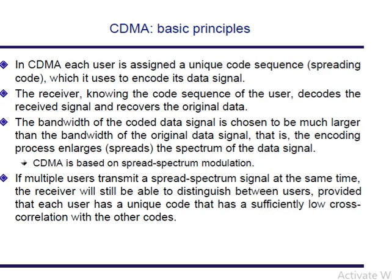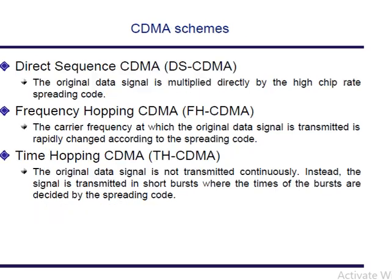In CDMA, each user is assigned a unique code sequence. The receiver, knowing the code sequence of the user, decodes the received signal and recovers the original data. The bandwidth of the coded signal is chosen to be much larger than the bandwidth of the original data signal — that is, the chip rate is much larger than the data rate. CDMA is based on spread spectrum modulation. If multiple users transmit spread spectrum signals simultaneously, the receiver can still distinguish between users, provided each user has a unique code with sufficiently low cross-correlation. CDMA can be broadly classified as Direct Sequence CDMA, Frequency Hopping CDMA, and Time Hopping CDMA.